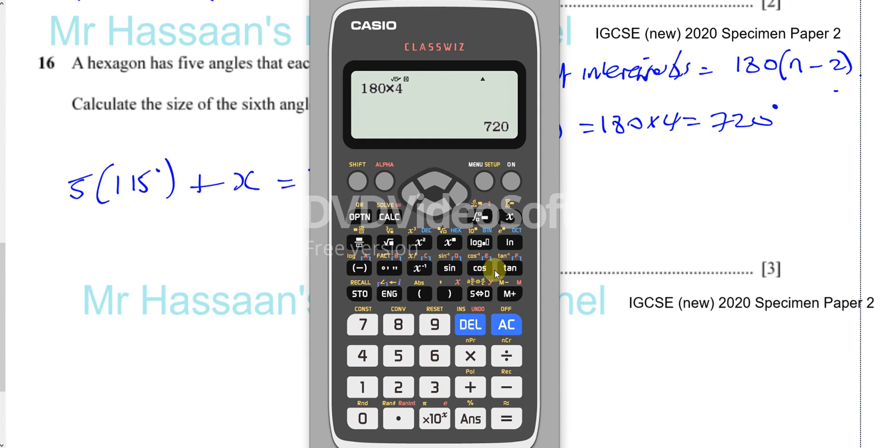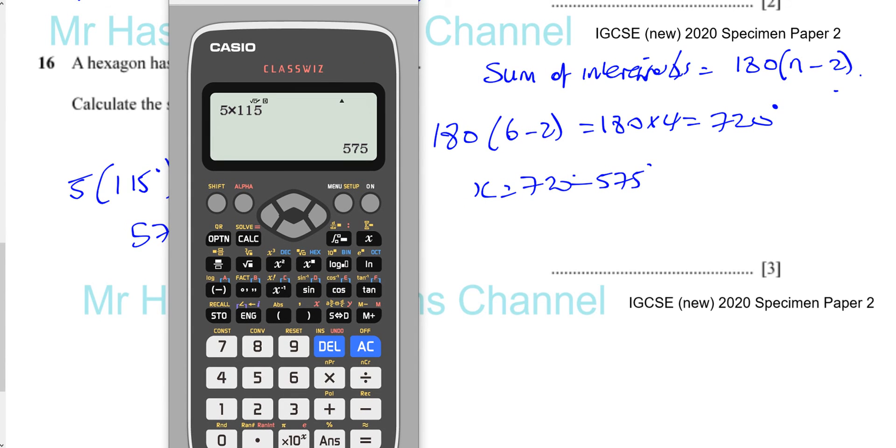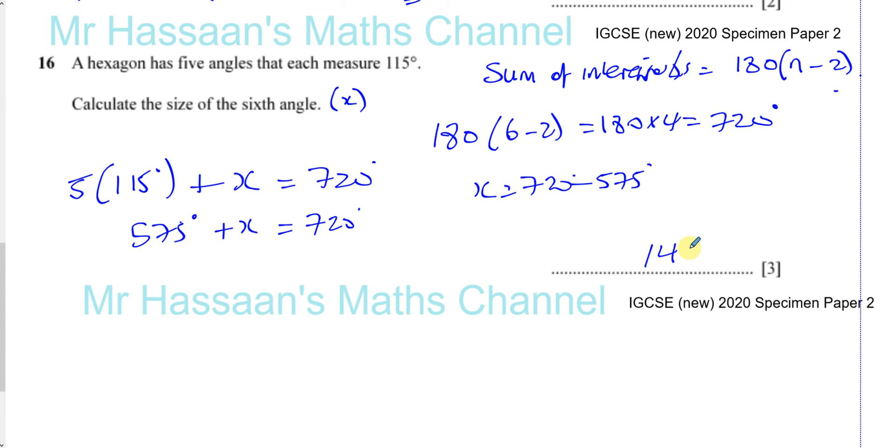So you have five angles, which measure 115 degrees, plus the sixth angle, let's call it X, is going to give us a sum of 720 degrees. So we have to just solve the simple equation. So you have 720, let's do five times 115, gives you 575, so you have 575 degrees, plus X equals 720. So X is equal to 720 minus 575, and there we have the answer to the question. So 720 minus 575 gives you 145 degrees. 145 degrees is the size of that sixth angle, and there we have the answer to question number 16.